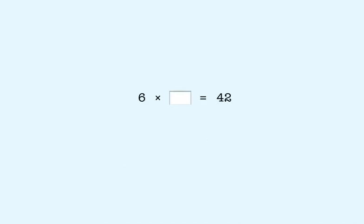Here's another one. 6 times what number equals 42? We want to answer the question: 6 times what number equals 42? If you don't remember the answer, you can find it like this. First, we divide 42 by 2, and we get 21.